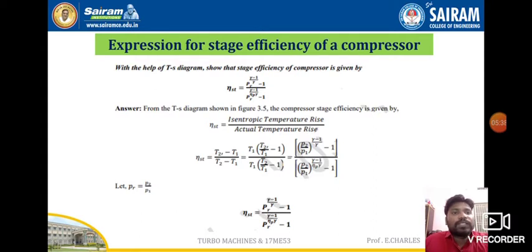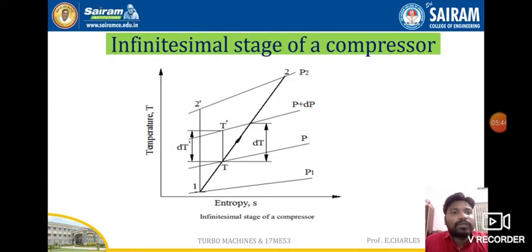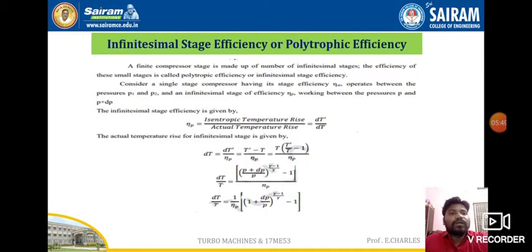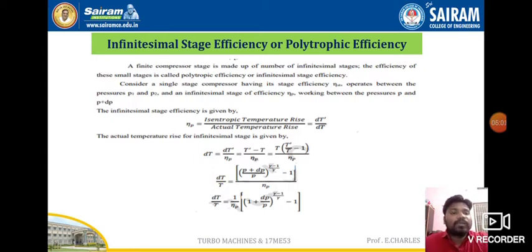We have now seen the infinitesimal stage of the compressor's stage efficiency, also called polytropic efficiency, and the isentropic efficiency. A finite compressor stage is made up of a number of infinitesimal stages. The efficiency of these small stages is called polytropic efficiency or infinitesimal stage efficiency, defined as isentropic temperature rise divided by actual temperature rise.